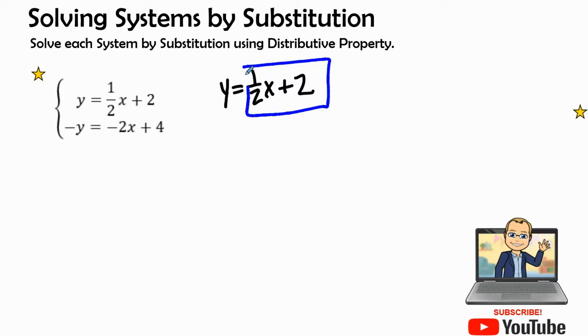So y equals 1 half x plus 2, that is all ready for us to plug into our value of the next equation. Here I have a negative y. Wherever I see a y I'm going to open up those parentheses, equals negative 2x plus 4. Notice that I see a negative y so I don't include it. Sometimes I have to be very careful and that's why I add the parentheses so I don't accidentally lose that negative sign, because that negative sign is important.